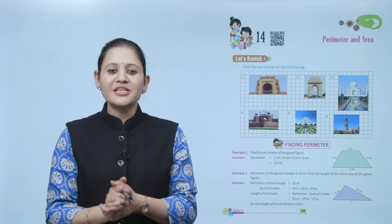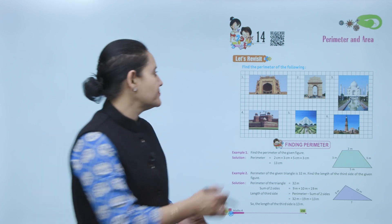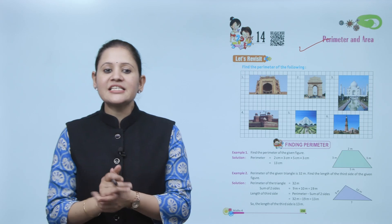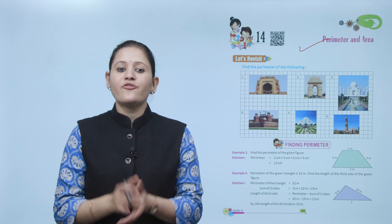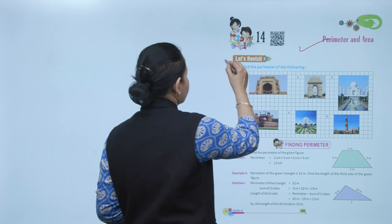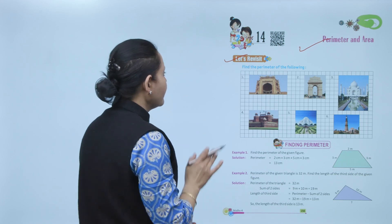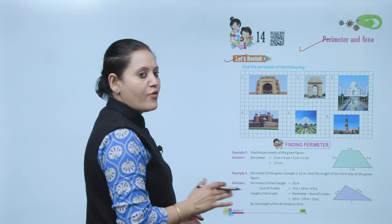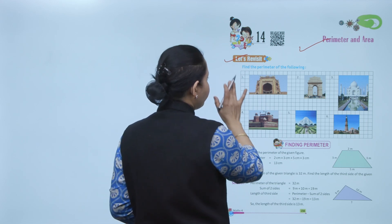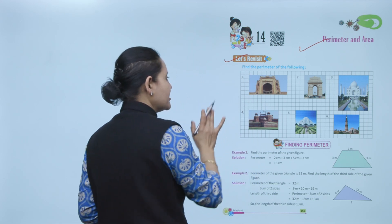Hello kids, welcome to today's maths class. Today we'll do perimeter and area. Let's revisit: find the perimeter of the following. Perimeter means the sum of all sides.